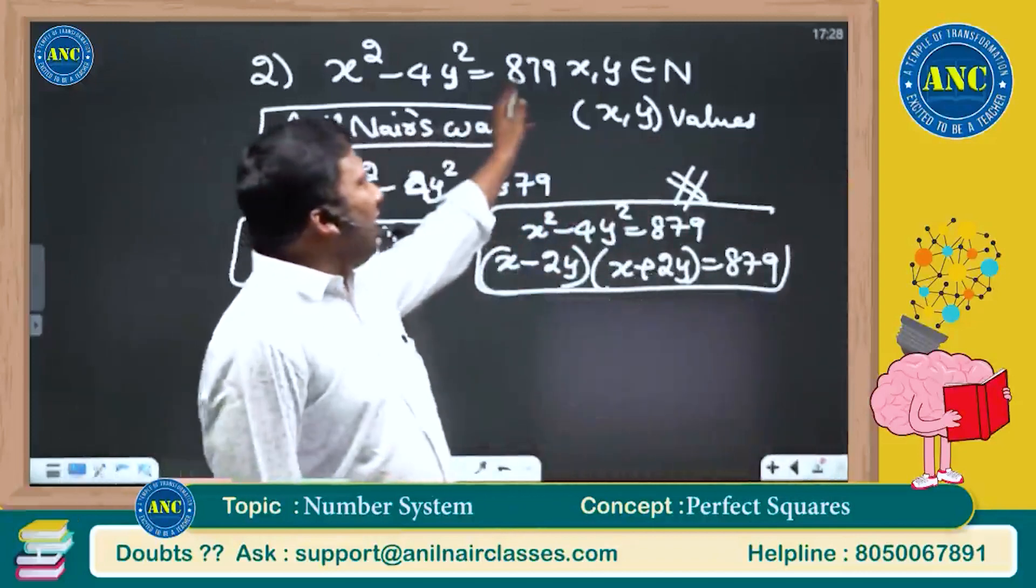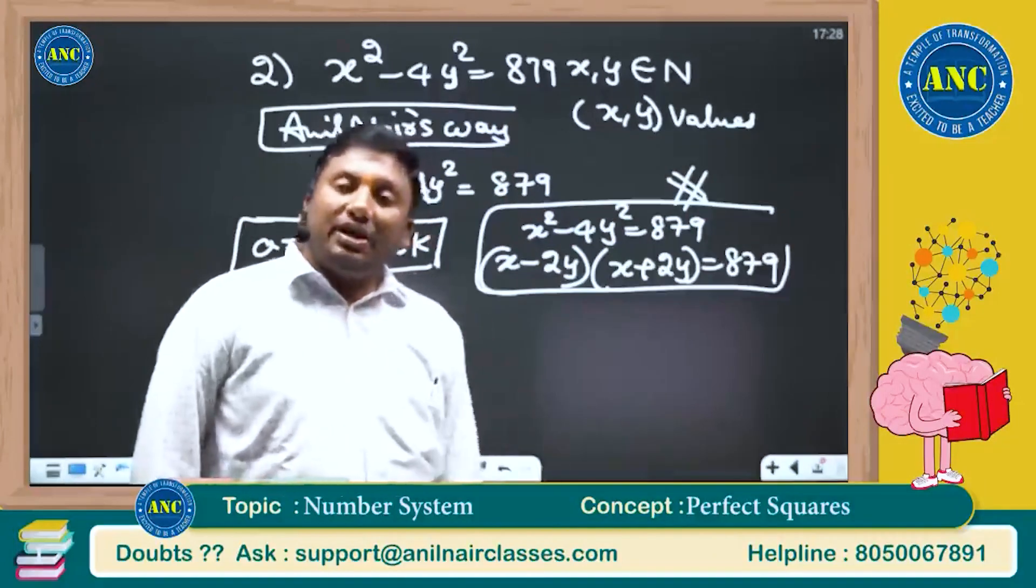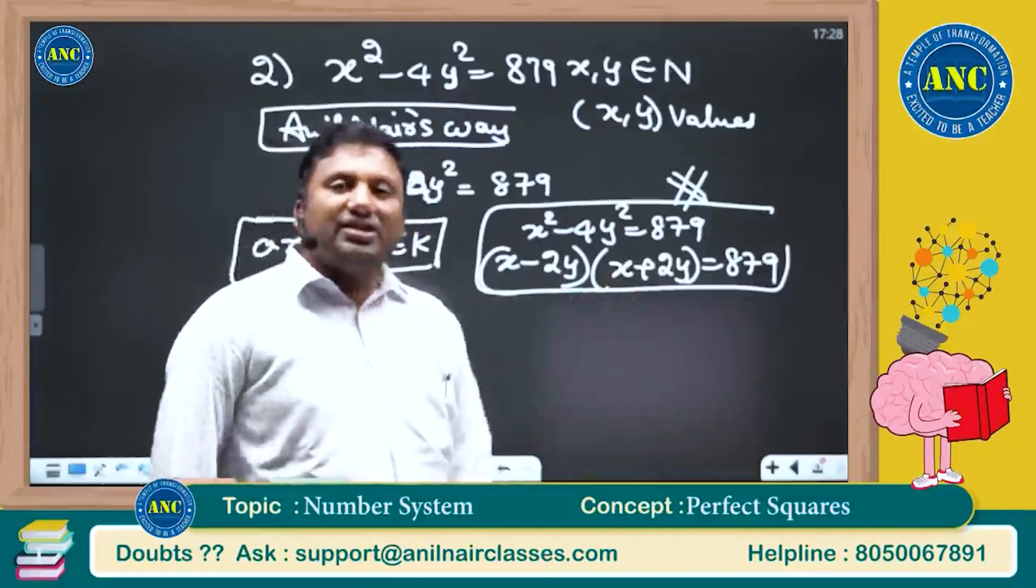In case if you are solving it like this, you have to check whether 879: 8, 17, 9. 8 plus 7, 15. 15 plus 9, 24. 2 plus 4, 6. You have to factorize 879.